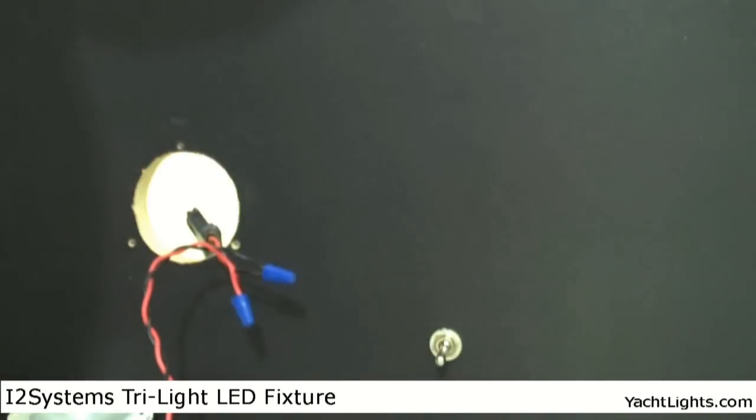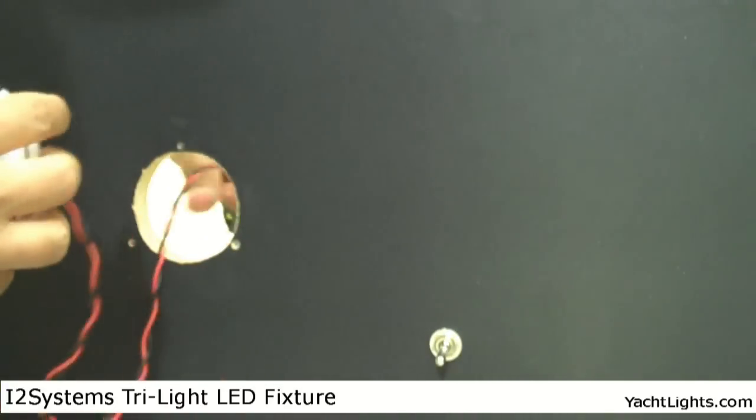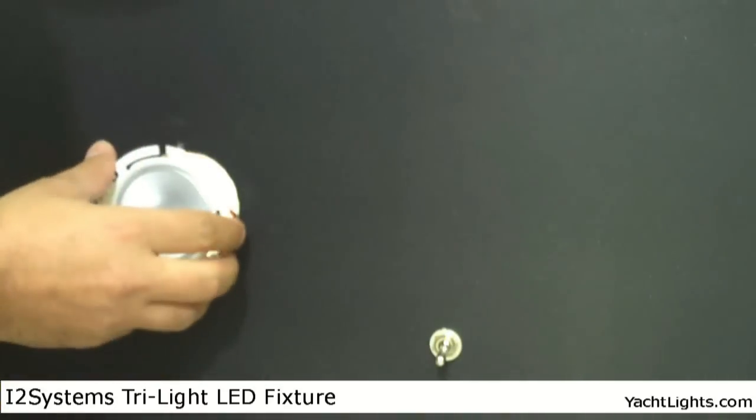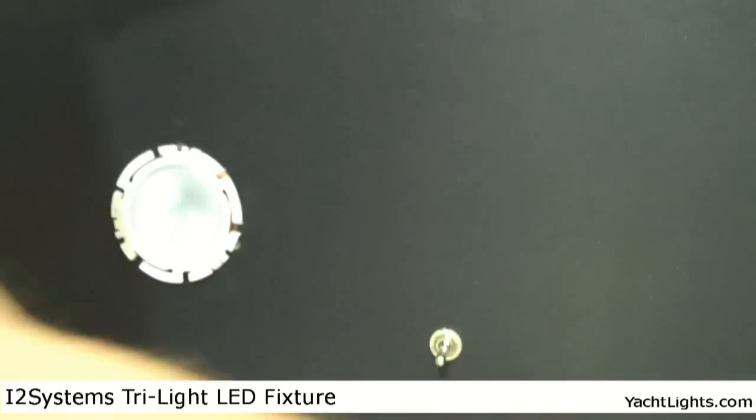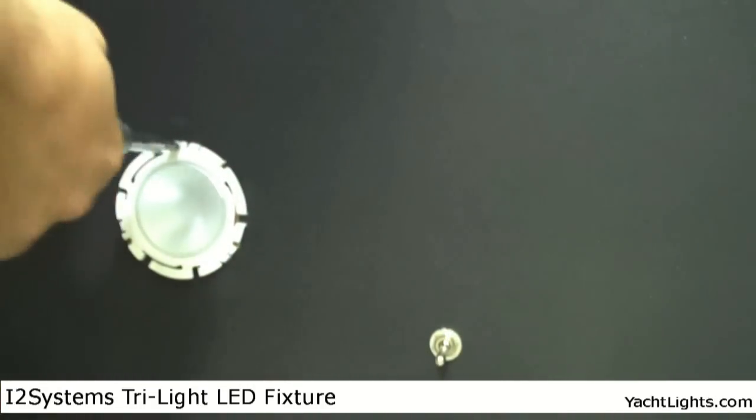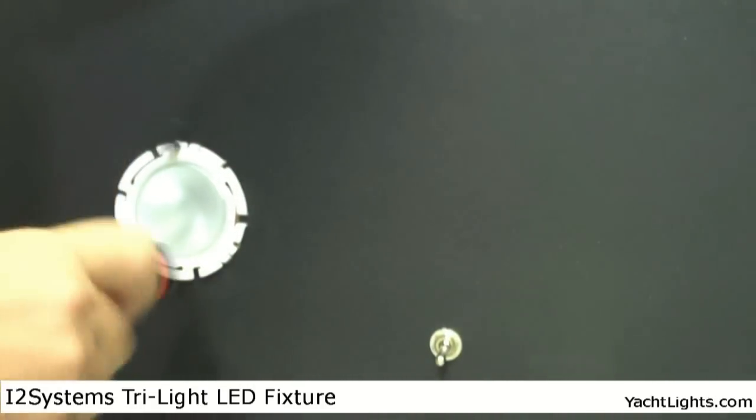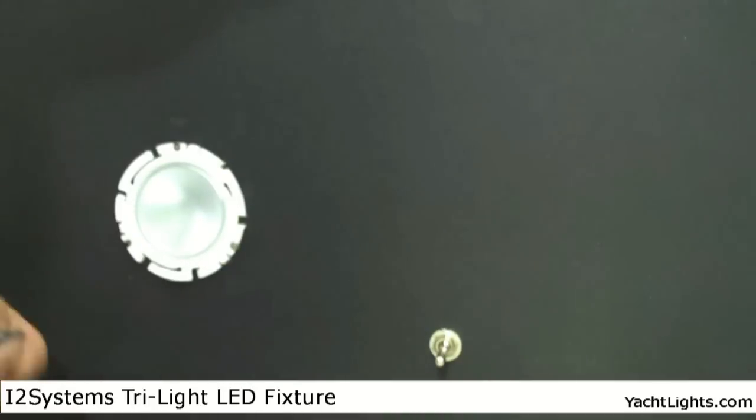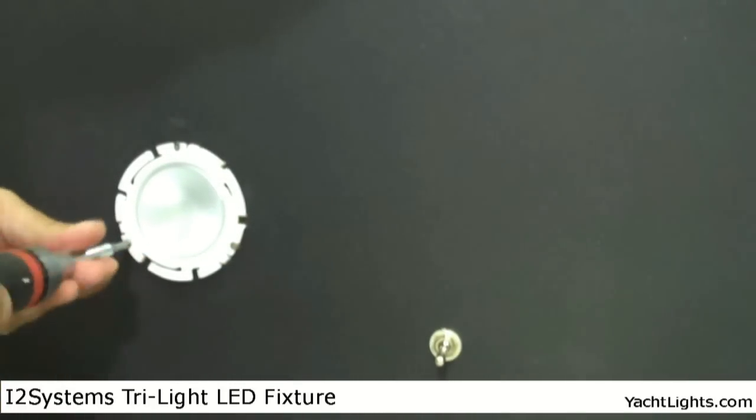Alright, once you've got your connections done, you're just going to retract your wires away and put three stainless screws to hold the fixture—the first screw, second screw, and lastly the final screw.